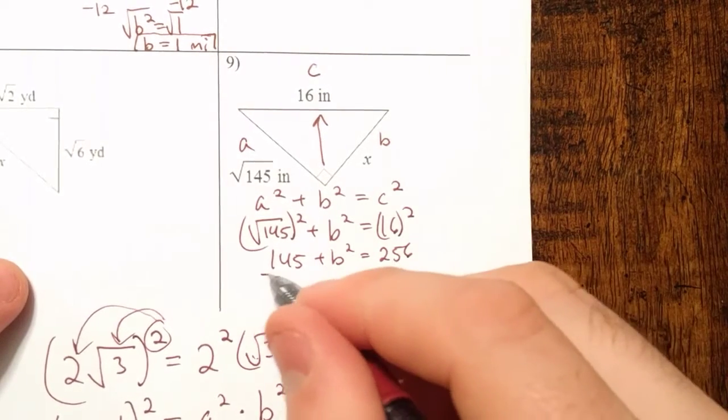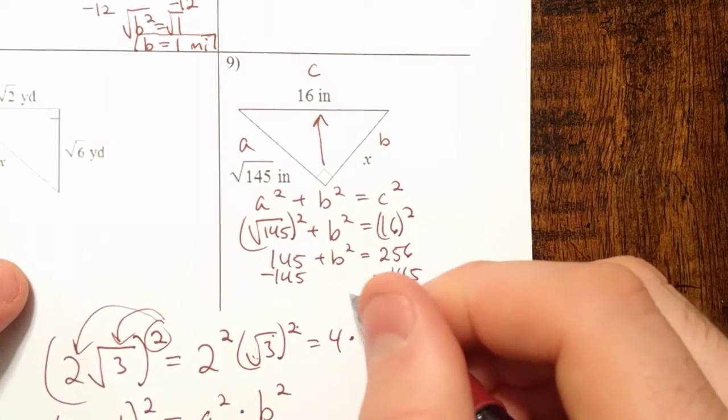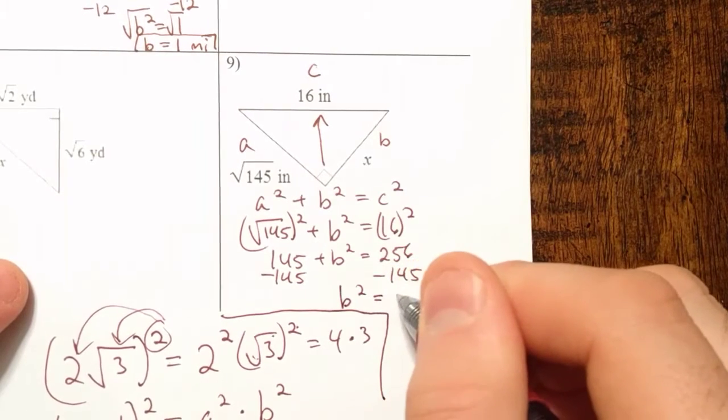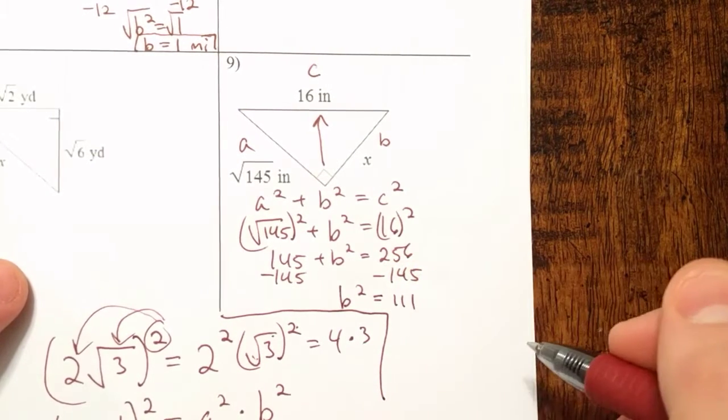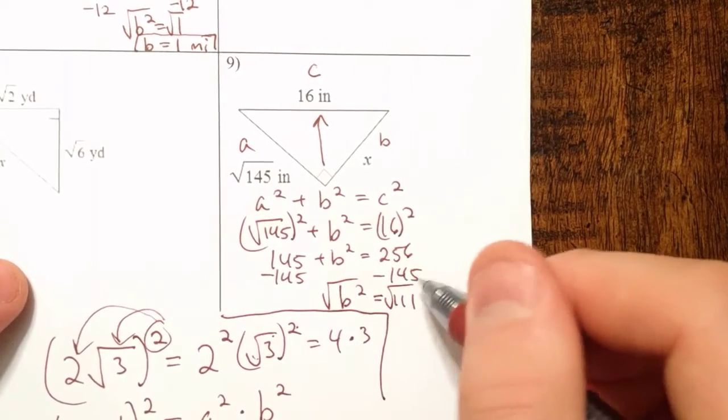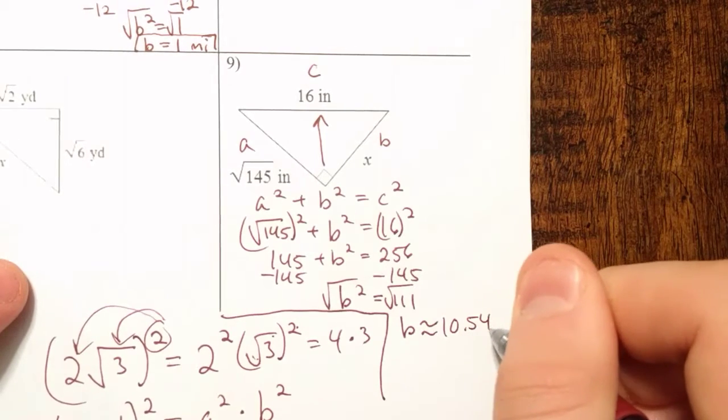The square root of 145 squared is 145 plus B squared equals 16 squared is 256. So solving for B squared, subtract 145 from both sides. B squared is going to be equal to 111. And square root of both sides. B is going to be approximately 10.54 inches.